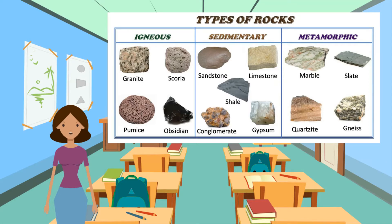Igneous rocks are formed as molten magma deep in the earth's crust. They cool slowly and solidify underground and are very resistant to erosion. Most sedimentary rocks consist of mineral particles formed by the breakdown of older rocks. Limestone, chalk, and coal are sedimentary rocks formed from the fossilized remains of animals and plants. Metamorphic rocks have been changed as the result of heat, pressure, or chemical reactions.